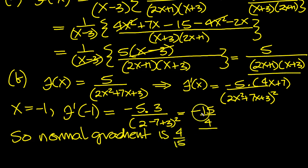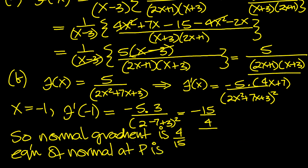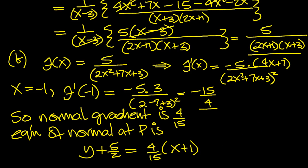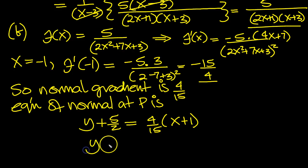Flip the sign. Because this times this must give a product of minus 1. So it's 4 fifteenths. So equation of normal then at P is, and then we can just write y minus the y value, which was minus 5 over 2. It goes through the point P. So it's plus 5 over 2 is equal to the gradient, which is 4 fifteenths, times x minus the x value of P, which is minus 1. So that flips out to a plus 1. So there's two minuses.